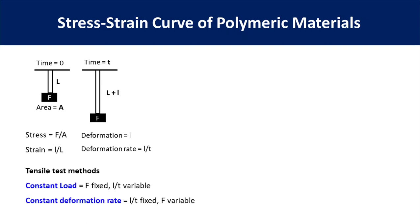Tensile testing can be performed in two conditions: either under fixed load or at a constant rate of deformation. In case of fixed load, a specific amount of load is applied on the sample and deformation is measured over time. In case of constant rate of deformation, the sample holding jaw moves at a constant speed, like 5 cm per minute, and the machine automatically increases or decreases stress to stretch the sample.